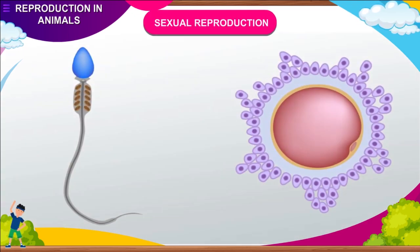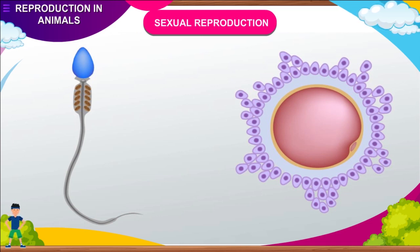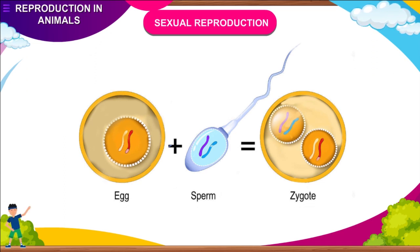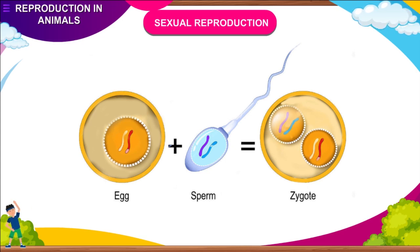Sexual Reproduction: Like plants, the reproductive parts in animals also produce gametes that fuse to form a zygote. It is the zygote that develops into a new individual. This type of reproduction, beginning from the fusion of male and female gametes, is called sexual reproduction.